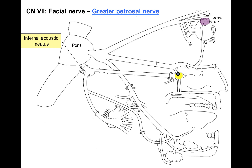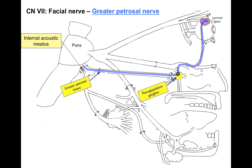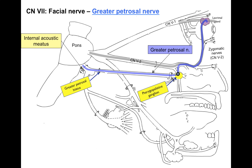Here we show that innervation. There's the internal acoustic meatus and the greater petrosal hiatus where the facial nerve courses, and there's the pterygopalatine ganglion. The greater petrosal nerve courses from the facial nerve through the internal acoustic meatus, through the greater petrosal hiatus, synapses in the pterygopalatine ganglion, and then hitchhikes on V2 up to V1 to innervate the lacrimal gland. V2 and V1 are shown in gray — these parasympathetics from CN7 hitchhike on cranial nerve 5 to reach their destination.